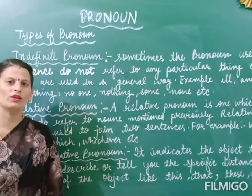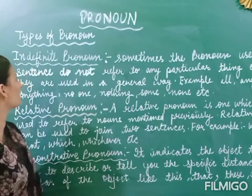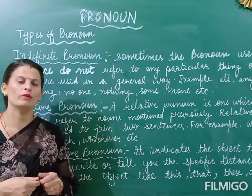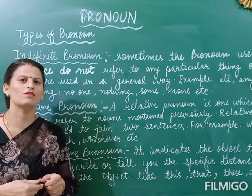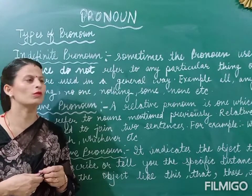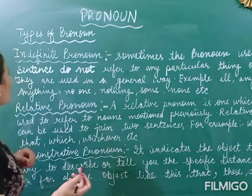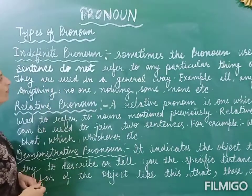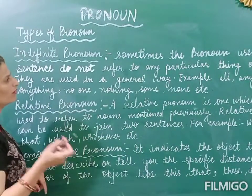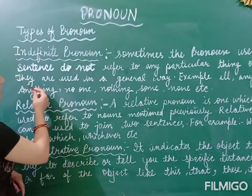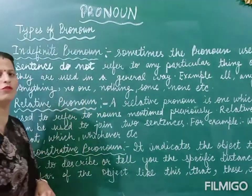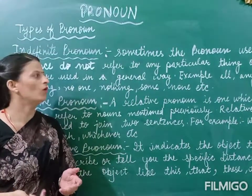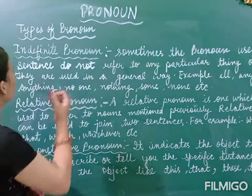Hello kids, how are you today? We are discussing pronouns and their types. The first type is indefinite pronoun. Sometimes the pronoun used in a sentence does not refer to any particular thing or person — they are used in a general way. We are not pointing to any person, place, or object. That type of pronoun is called an indefinite pronoun.